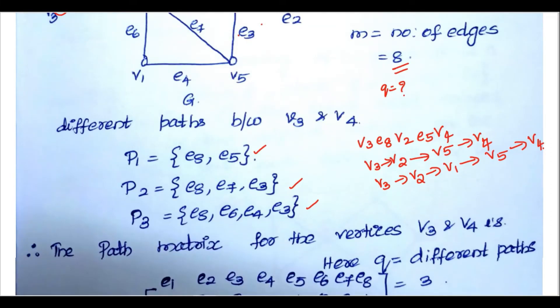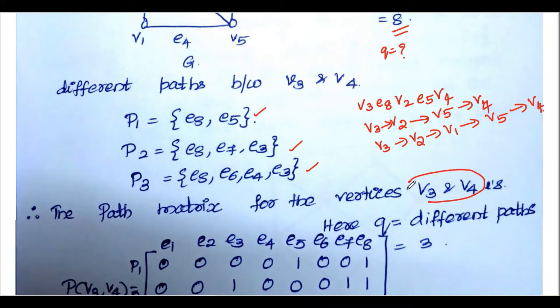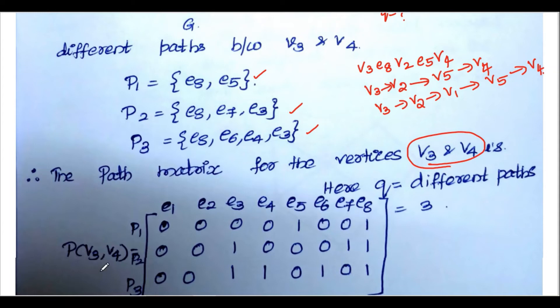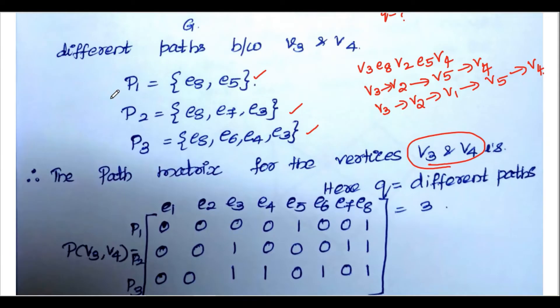We construct the path matrix. The path matrix is for only the vertices v3 and v4. So P(v3,v4) equals row-wise, we take the different paths. We have 3 paths: p1, p2, p3.